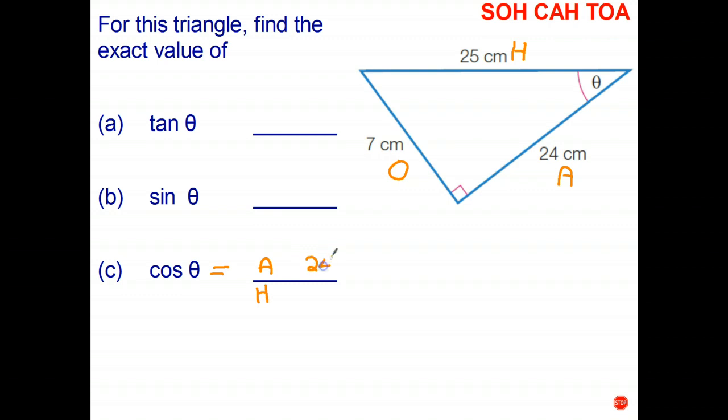Well, the adjacent side is 24, the hypotenuse is 25. So in fact, I'm going to put adjacent over hypotenuse—that's the formula. And the adjacent is 24 and the hypotenuse is 25, so the answer is: cosine of the angle that we're interested in is 24 over 25.